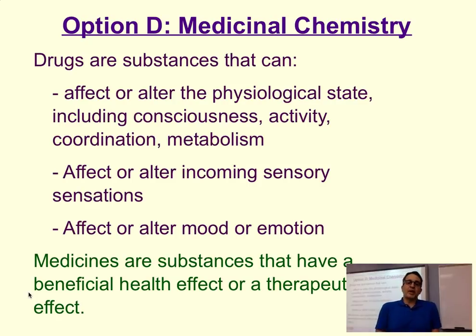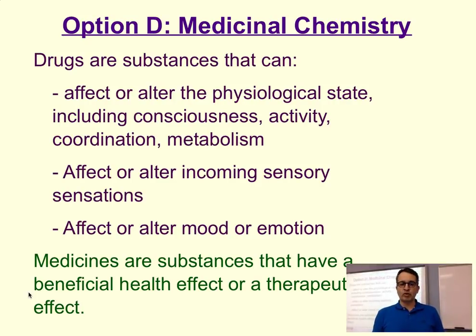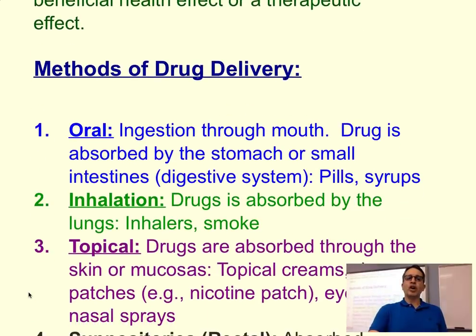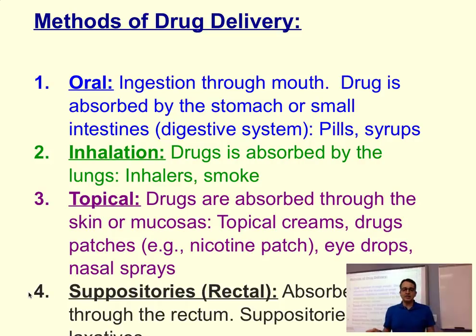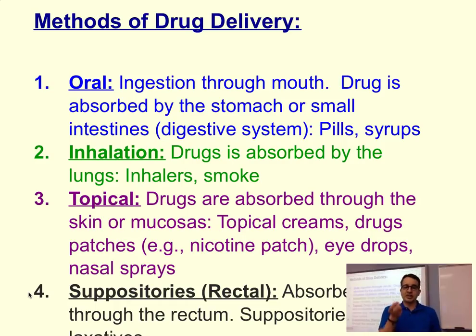The big distinction that we make between drugs and medicines is that a medicine is a substance that has a beneficial health effect — a therapeutic effect — something that is desired in terms of improving your health. That's the only difference between what is a drug or a medicine. We're going to use the term drug generally in the IB. So let's talk about what are some of the methods of drug delivery. Depending on how a drug is manufactured and its stability, we will choose different methods to deliver the particular drug.